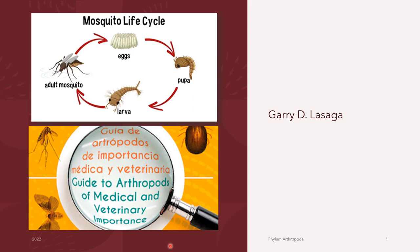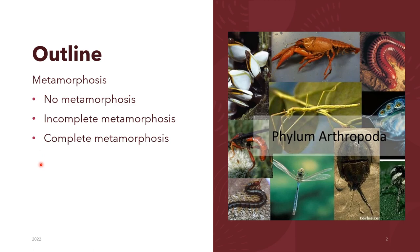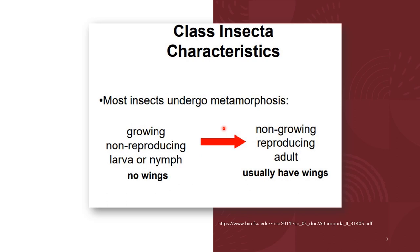Welcome to part 4 of our presentation on the characteristic features of the phylum Arthropoda. This presentation will discuss the description of metamorphosis and tackle the three types of metamorphosis among insects: those that exhibit no metamorphosis, those having incomplete metamorphosis, and those having a complete type of metamorphosis.